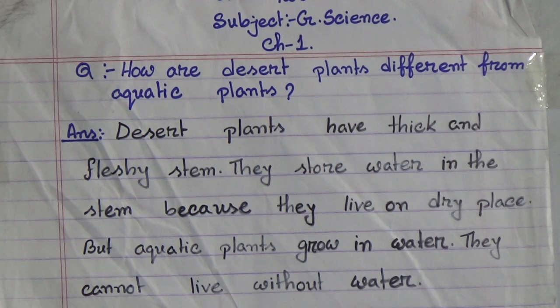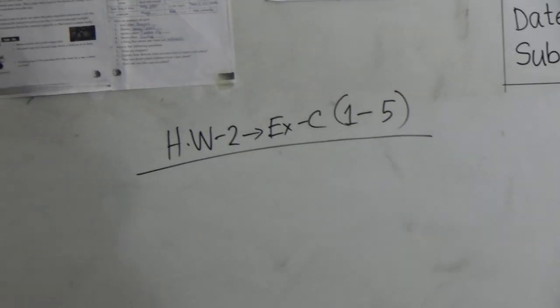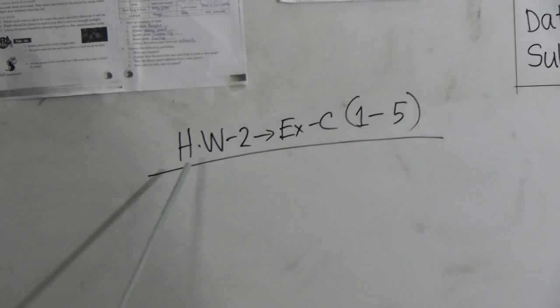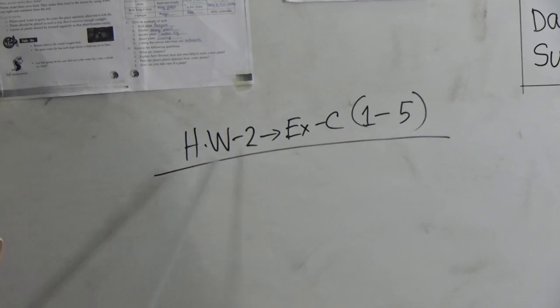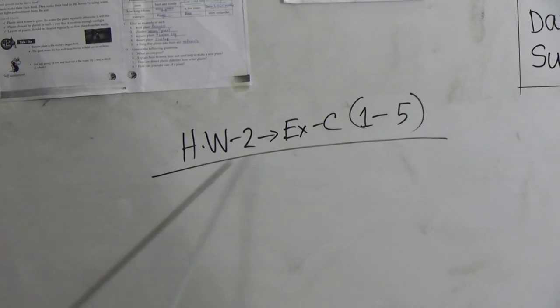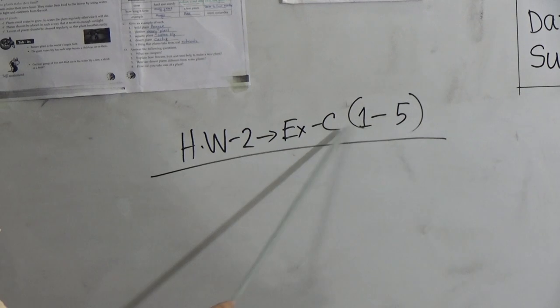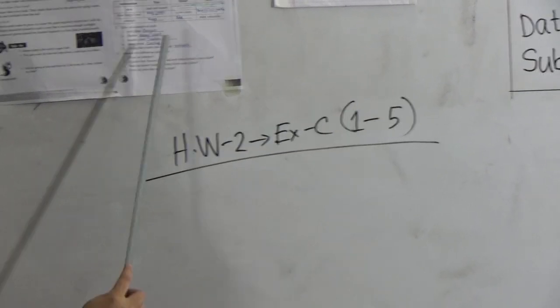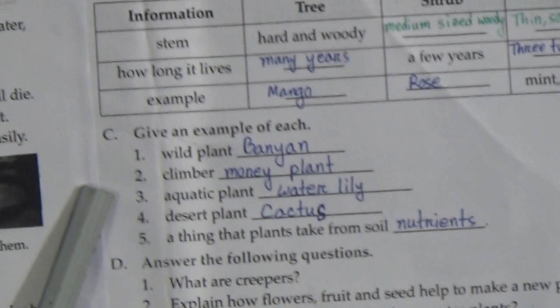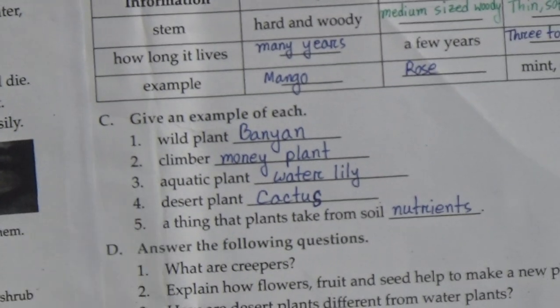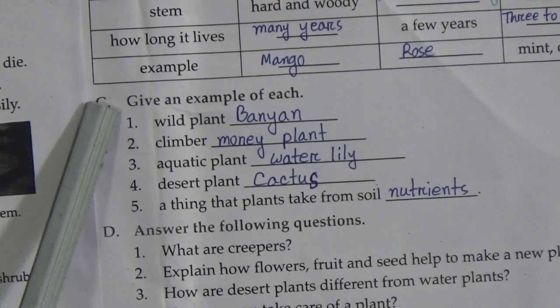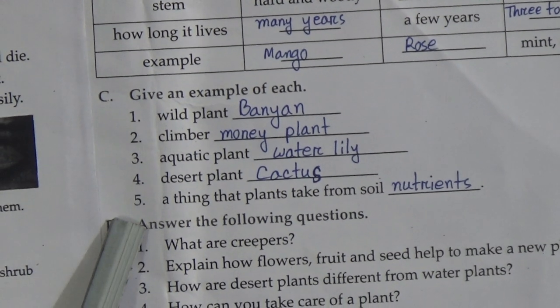So dear students, I have finished today's topic. Now for homework — this is HW number 2 — you will do exercise C, questions 1 to 5. This is on page number 40 and there are 5 exercises in total. You will do this homework.